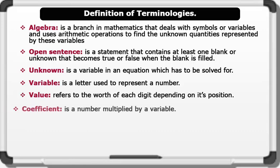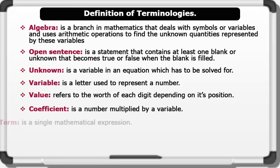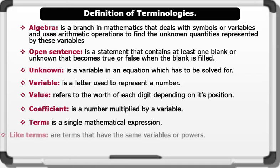Coefficient is a number multiplied by a variable. A term is a single mathematical expression. Like terms are terms that have the same variables or powers.